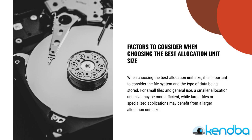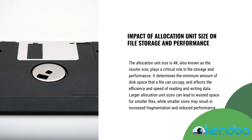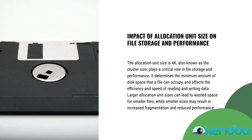When choosing the best allocation unit size, it is important to consider the file system and the type of data being stored. For small files and general use, a smaller allocation unit size may be more efficient, while larger files or specialized applications may benefit from a larger allocation unit size. The allocation unit size, also known as the cluster size, plays a critical role in file storage and performance. It determines the minimum amount of disk space that a file can occupy and affects the efficiency and speed of reading and writing data. Larger allocation unit sizes can lead to wasted space for smaller files, while smaller sizes may result in increased fragmentation and reduced performance.